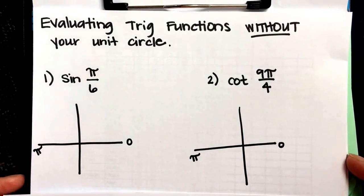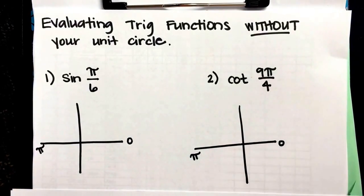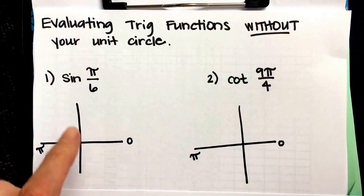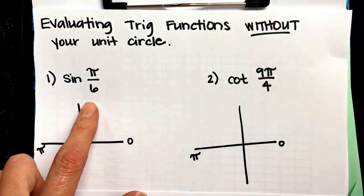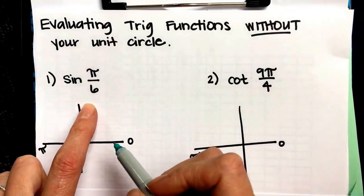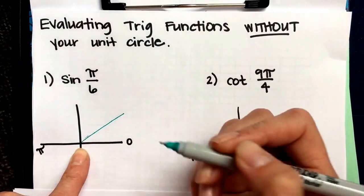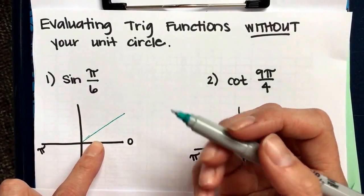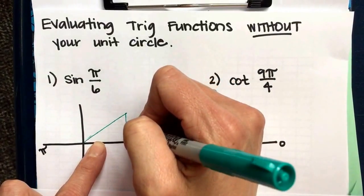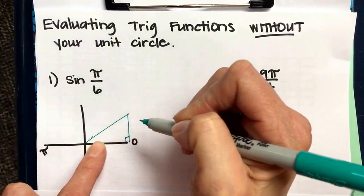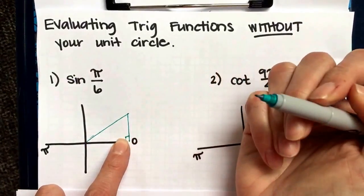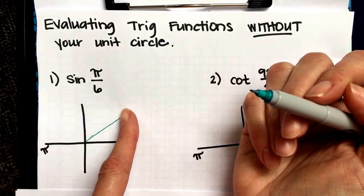You're not always going to have your unit circle, and this is how I do them more often than not. You want to begin by sketching the angle, pi over 6, that's 1 sixth pi, so that's not very far, that's about right here. And we need to find the reference angle, we want to make it into a right triangle. One side always lies on the x-axis and then the other side is always going to be vertical.